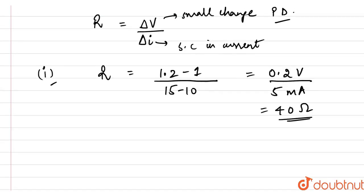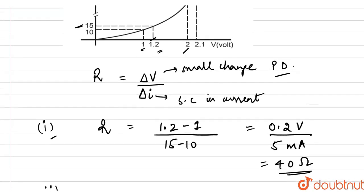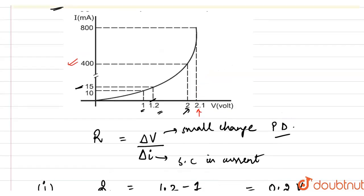Now, for our second part, the forward bias of 2 volt is applied. We have taken two instances here at 2 volt and 2.1 volt. At 2 volt, the current is 400 milliampere. At 2.1 volt, the current is 800 milliampere.